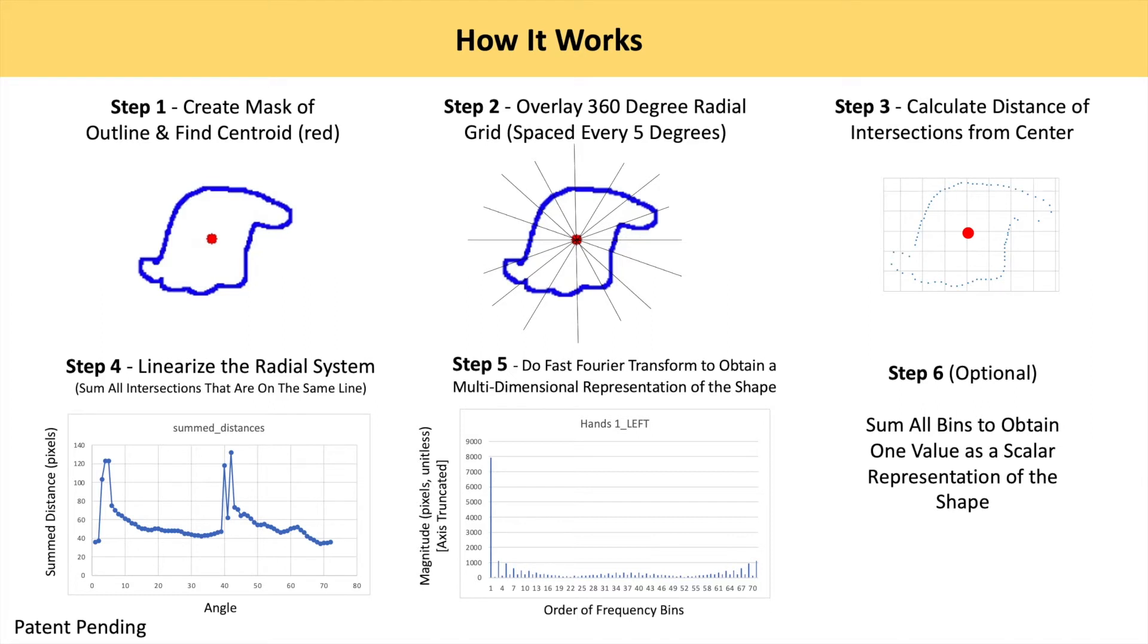Proceeding to step 3, this then allows us to measure every intersection of the radial lines in the shape and calculate their distance from the origin.